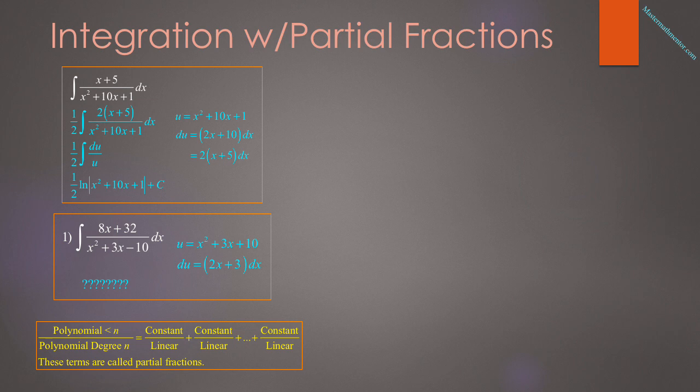In order to do a problem of this sort, we use a technique you may or may not have learned in pre-calculus. We look at a fraction in the form of a polynomial over a polynomial, where the denominator has degree n and the numerator has degree less than n. We can write this as a series of fractions, each in the form of a constant over a linear term. These terms are called partial fractions.